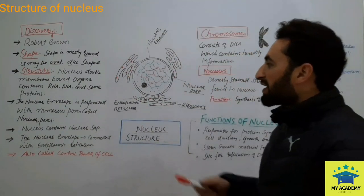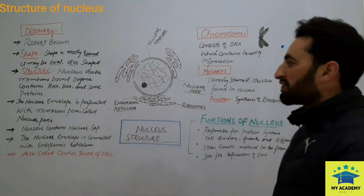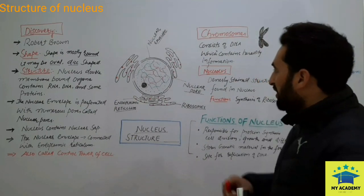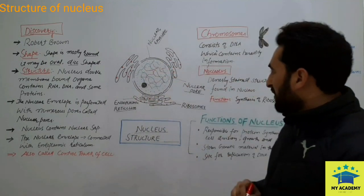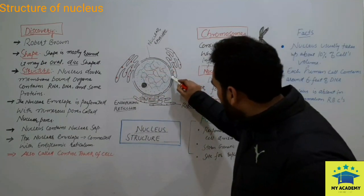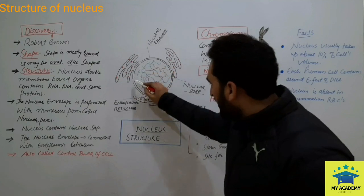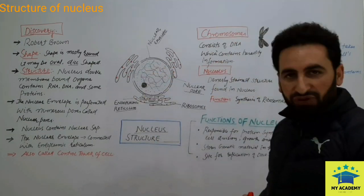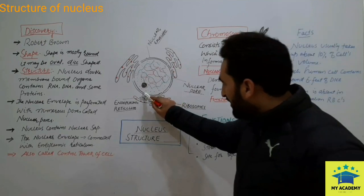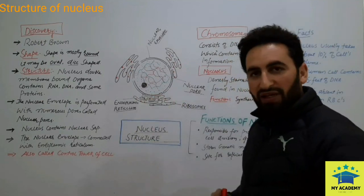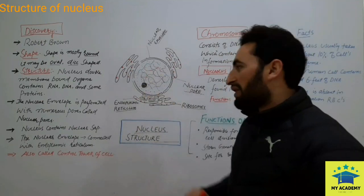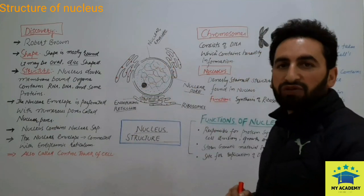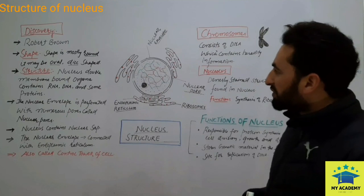The nuclear envelope is perforated with numerous pores called nuclear pores. If we look at the structure of the nucleus, we have small minute pores — these are called nucleopores. This nuclear envelope is also called the karyothika.